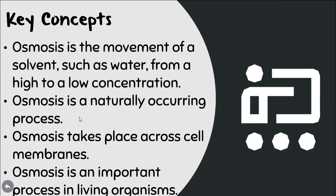What are the key concepts for today? Osmosis is the movement of a solvent, such as water, from a high to a low concentration. It is a naturally occurring process that happens in nature in all living things, and it takes place across cell membranes. Osmosis is an important process in all living organisms because without osmosis we wouldn't have life — water is essential for life.